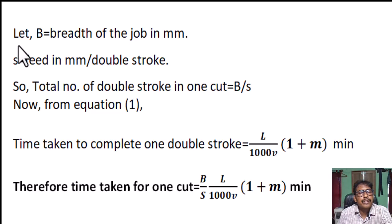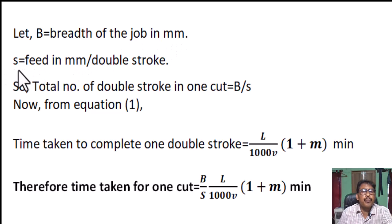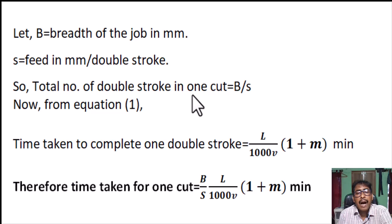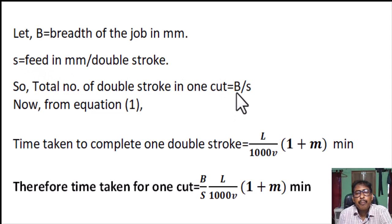Now, let B equal to width of the job in millimeters, and S equal to feed in millimeters per double stroke, meaning the tool advancement in millimeters per double stroke. Therefore, total number of double strokes in one cut equals B divided by S.